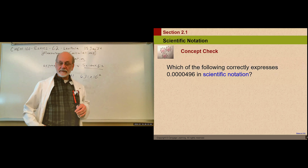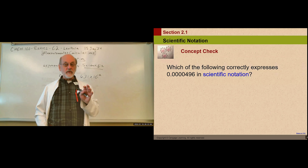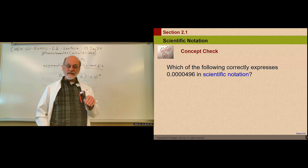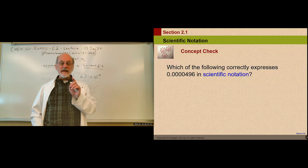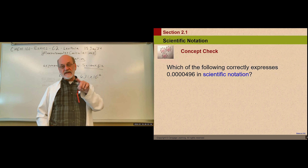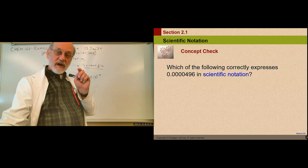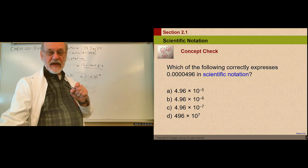Here's another problem — a very small number in standard notation. If we move the decimal to the right, it has to go one, two, three, four, five places in order to produce a coefficient between one and ten. So we store a negative five in the exponent. It's just a convenient way to write very large or very small numbers.